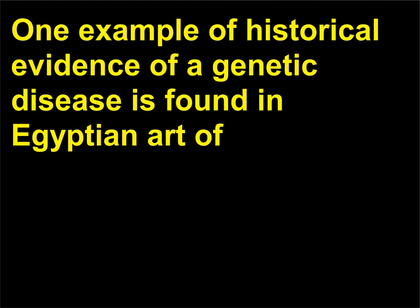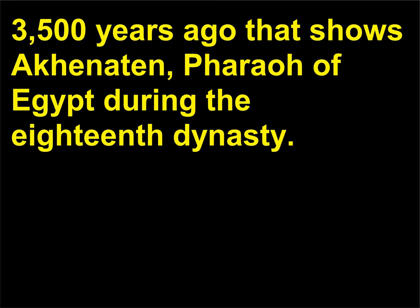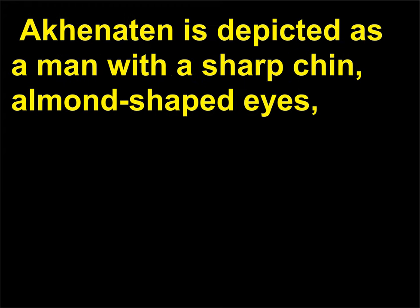What is the historical evidence of a genetic disease? This is found in Egyptian art of 3,500 years ago that shows Akhenaten, Pharaoh of Egypt during the 18th dynasty. Akhenaten is depicted as a man with a sharp chin and almond-shaped eyes.